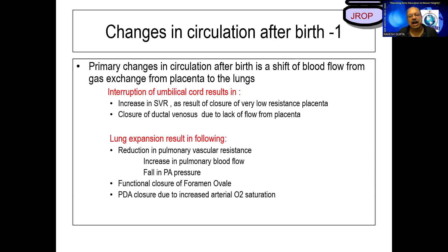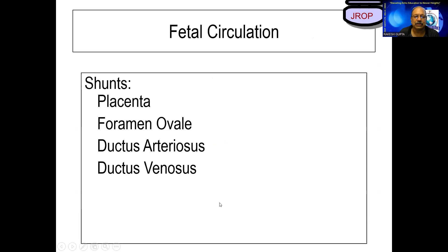What happens after birth? The primary exchange shifts from placenta to lungs, leading to umbilical cord interruption, increased systemic vascular resistance due to closure of the low-resistance placenta, closure of the ductus venosus due to lack of blood flow from the placenta, lung expansion, reduction in pulmonary vascular resistance, increase in pulmonary blood flow, fallen PA pressures, and functional closure of the foramen ovale and PDA due to increased arterial saturation.